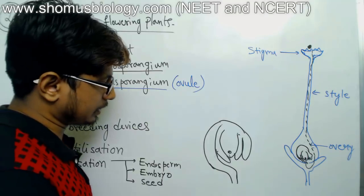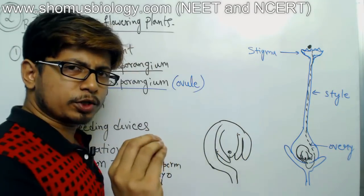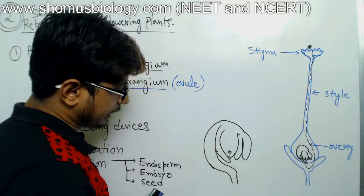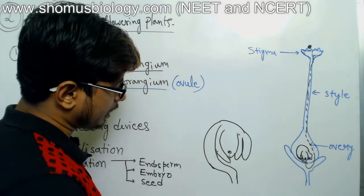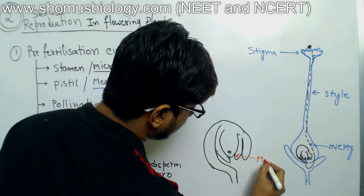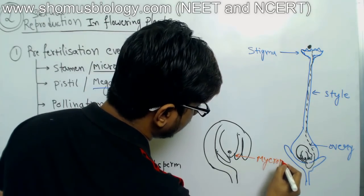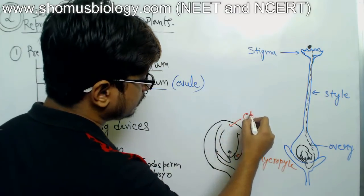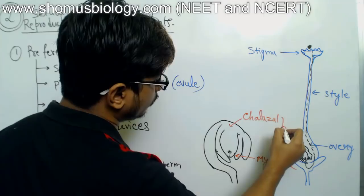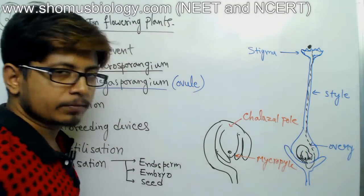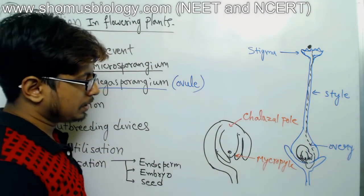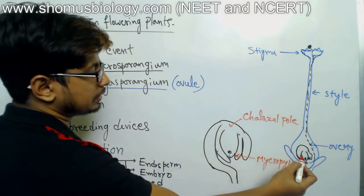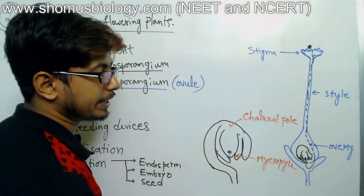Now let's imagine two portions — two poles. One is the open pole and the other is the closed pole, and they have two separate names. The open pole is known as the micropyle and the closed pole is known as the chalaza. These are the two sections of the ovule.